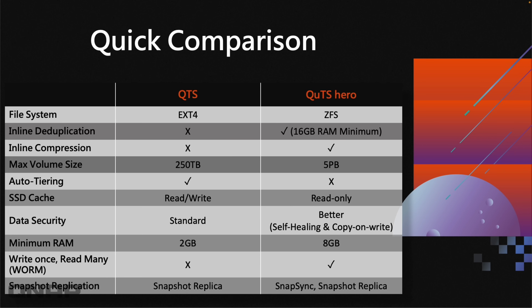When we first launched QUTS Hero, we had an upper volume limit of one petabyte, but that was changed in firmware updates — it's now a maximum volume size of five petabytes. With QTS it's 250 terabytes, which for a lot of users with smaller NAS is still effectively unlimited. If you've got a four-bay NAS, the biggest drives today are only 22 terabytes, so you can't even hit the 250TB limit. It really only affects very large deployments or setups with lots of expansion shelves.